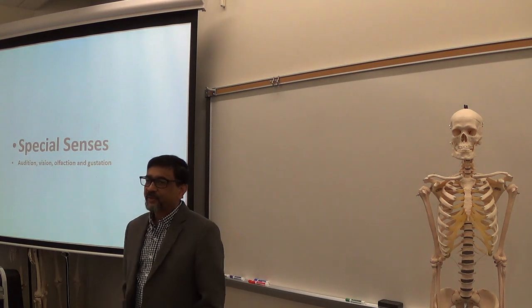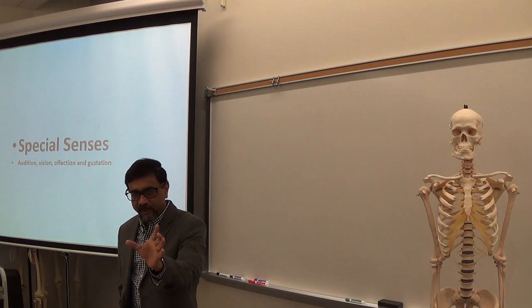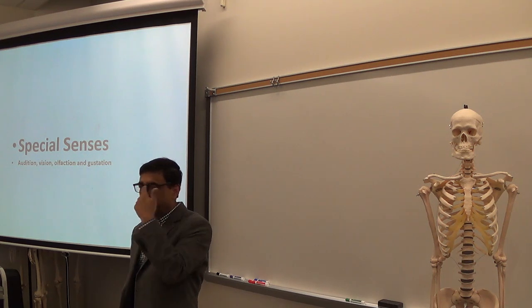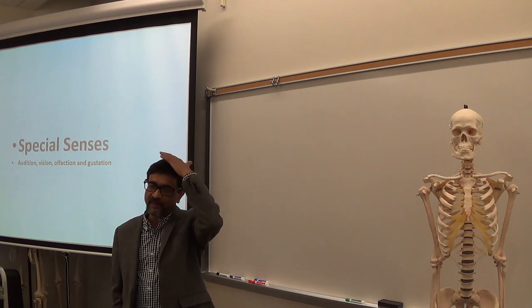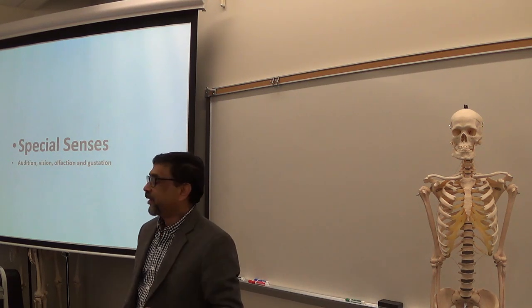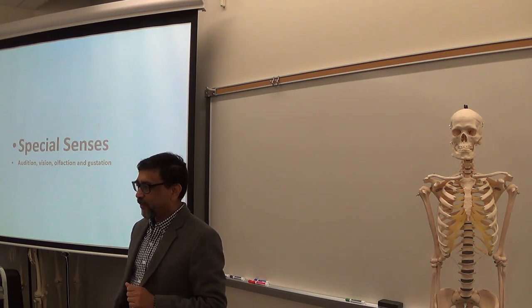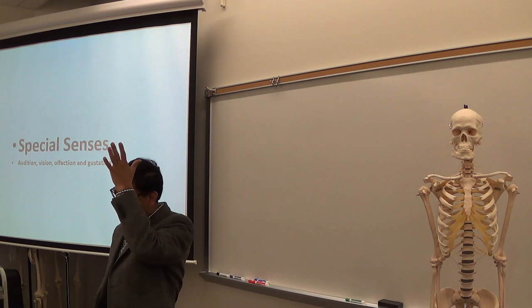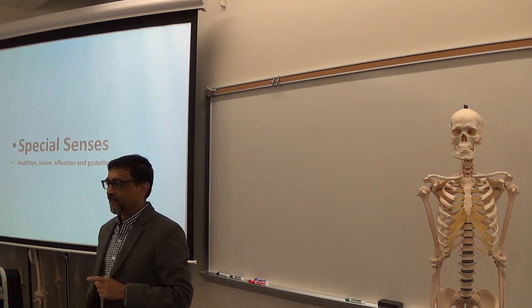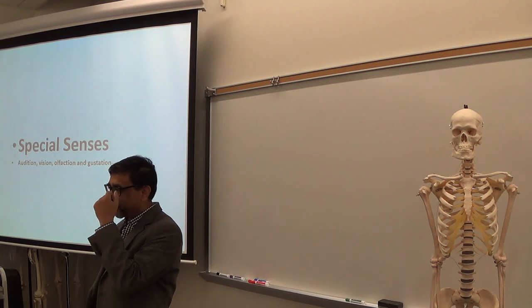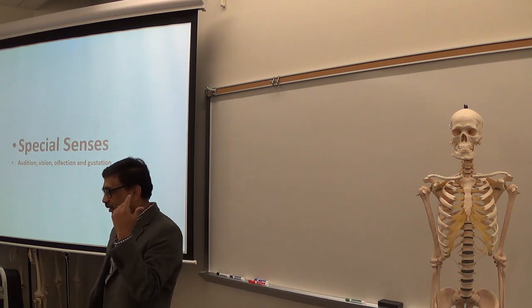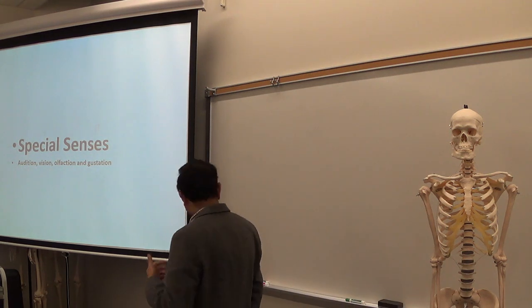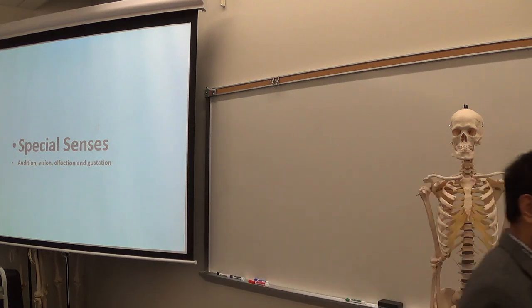Remember, all sensory systems have peripheral organs and a central part. For the visual system, the peripheral organs are your two eyes, and the central part is located inside the central nervous system. Similarly, your auditory system has peripheral organs — two ears — and a central part inside the brain. For the olfactory system, the peripheral organ is the nose, and for the gustatory system, it's the tongue. The central part is located inside the CNS.